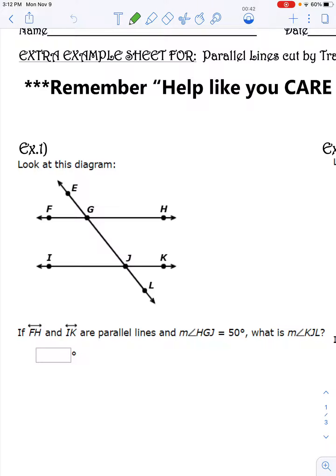This is number one on your transversals and angles practice. Look at this diagram. If FH and IK are parallel lines and the measure of angle HGJ is 50 degrees, what is the measure of KJL?